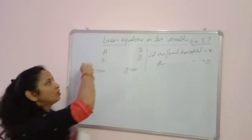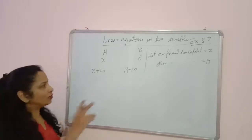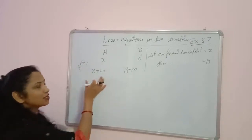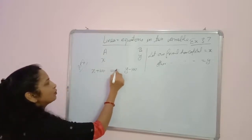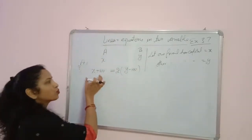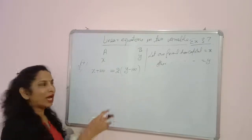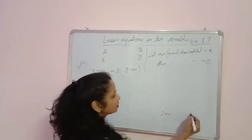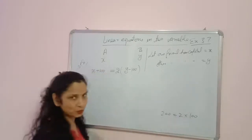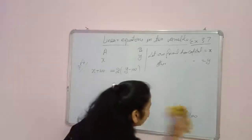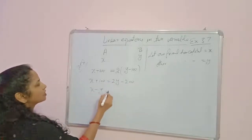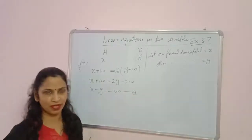A's capital increases by 100 and B's decreases by 100. According to the condition, X plus 100 equals 2(Y minus 100), which simplifies to X plus 100 equals 2Y minus 200. So equation 1 is: X minus 2Y equals minus 300.